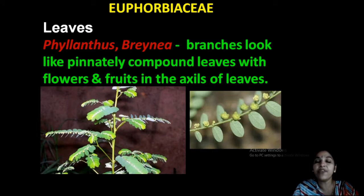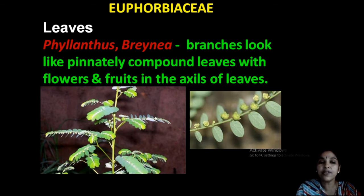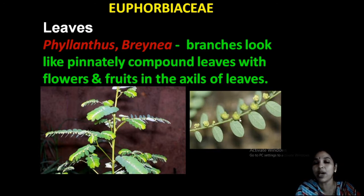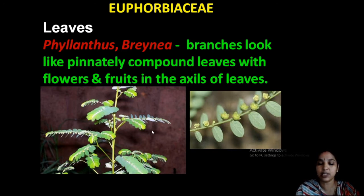In Phyllanthus and Breynia, you can see pinnately compound leaves. In Phyllanthus, the leaves appear pinnately compound with flowers and fruits in the axils of the leaves. These apparent axes are pinnately compound, and on the axils you can see flowers. This is a peculiar feature of Phyllanthus.